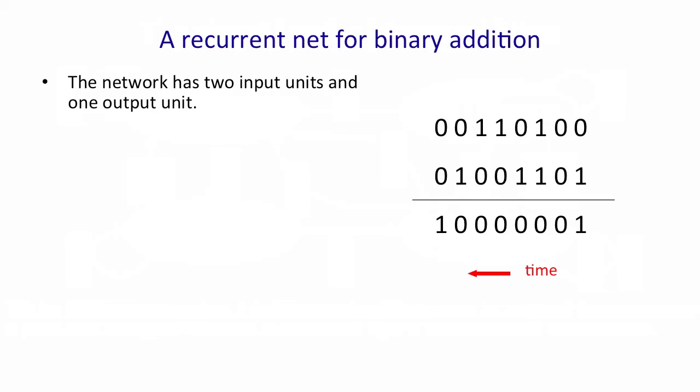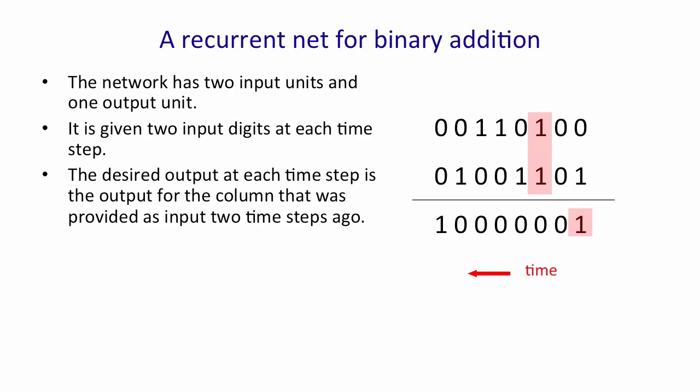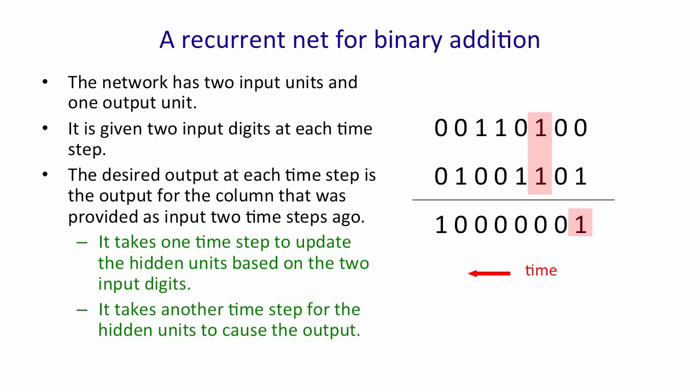So a recurrent neural net for binary addition needs to have two input units and one output unit. It's given two input digits at each time step and it also has to produce an output at each time step. And the output is the output for the column that it took in two time steps ago. The reason we needed a delay of two time steps is that it takes one time step to update the hidden units based on the inputs, and another time step to produce the output from the hidden state.